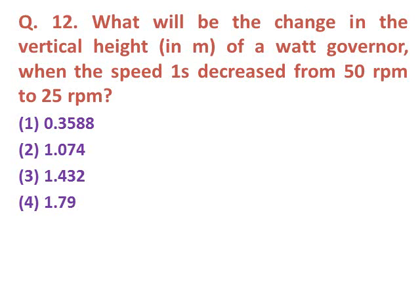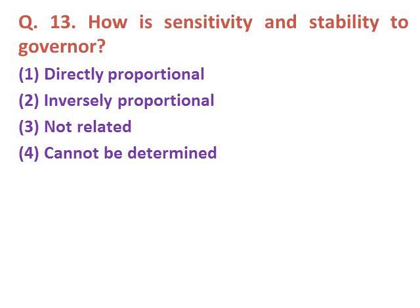Question twelve: What will be the change in vertical height of a Watt governor when speed decreases from 50 RPM to 25 RPM? Using the formula height of governor equals 895 upon N squared for both speeds and solving, we get the answer 1.074 meters.